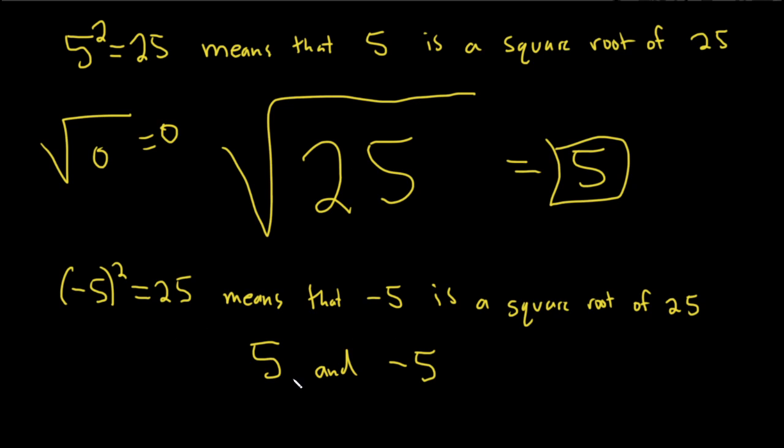Now, 25 does have two square roots, 5 and negative 5, and that is really important. But in this example, in this problem, whenever you see this symbol, you just want the positive one.